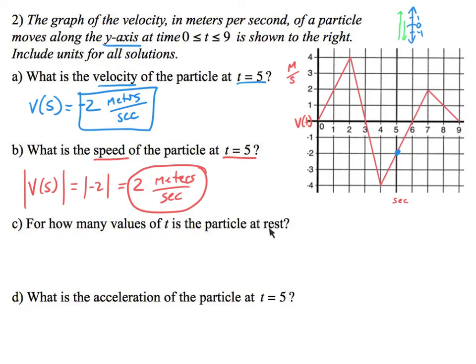For how many values of t is the particle at rest? If the particle is at rest, that means the velocity equals 0. The velocity is 0 there, there, there, and all the way at the end at 9. So that looks like 4 times — at t = 0, 3, 6, and 9. If you want the exact times, it would be 0, 3, 6, and 9.